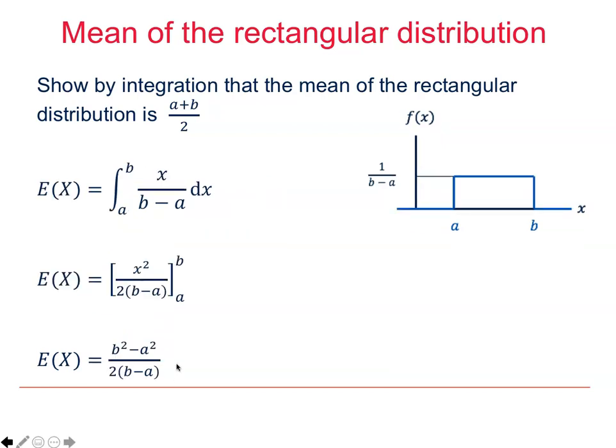Here are the first two steps of the integration, and we can see that x becomes x squared over 2. And then we substitute in B and A to derive this expression. The numerator can be factorized, that's the difference of two squares. So if we write it as B plus A times B minus A, and then in the denominator we've got 2 times B minus A. So these cancel, and we finish up with the formula that we were seeking to derive.